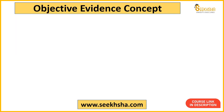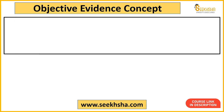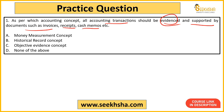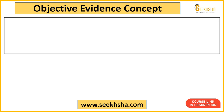The right answer here is Option C — Objective Evidence Concept. Objective Evidence Concept ke andar basically kya bola jata hai ki aap jo bhi transaction karo, aisa nahi hai ki aapko koi aakar ke bole. For example, ek accountant ko office boy aakar ke bole ki 5000 rupay ki transaction handle kar do bhai khata mein.